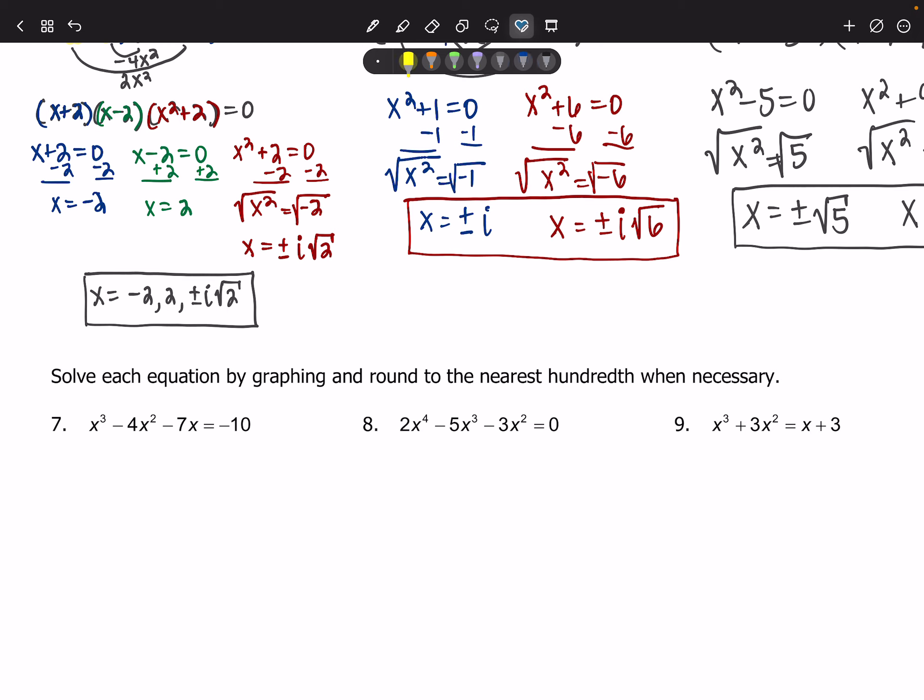We've got a left-hand side of the equation that involves an expression and the right-hand side of the equation that is not equal to zero. Versus number eight where the left-hand side of the equation is set equal to zero. And then number nine, we're back to the left-hand side equal to a cubic polynomial and the right-hand side equal to a linear polynomial.